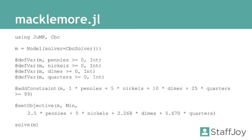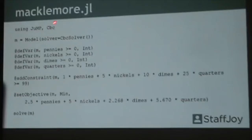This is on the GitHub repo that I published, but it's actually fairly straightforward to do. Basically we go through and we say we want to use JUMP. We're going to use a solver called CBC.